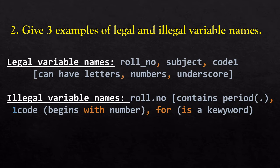Some illegal variable names: role.number — here dot is a special character which is not allowed. 1code — this variable name begins with a number which is not allowed in Python. And for — we have taken 'for' as a variable name but it is not acceptable because 'for' is a reserved keyword. Keywords like for, while, and similar words will not be accepted as variable names.